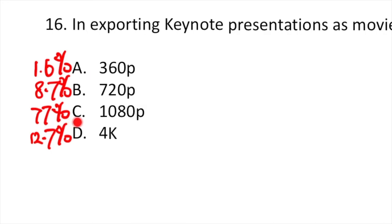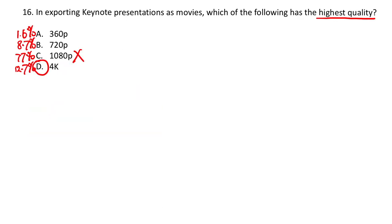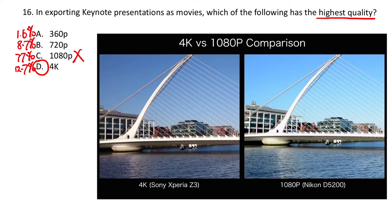We can see that most of the students chose C as the answer. However, this is not correct, because 4K, the answer D, has an even higher resolution than 1080p. Here we can look at an example comparing a 4K photo and 1080p photo. We can see that there are more details in the photo in a 4K version. Therefore, the answer is D.